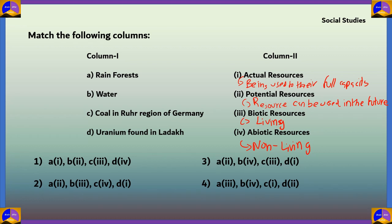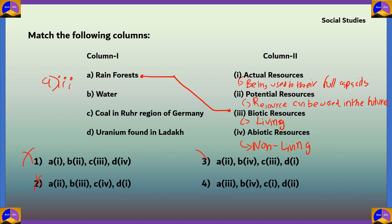We can match each item or use a shortcut: biotic resources are living things, and in column 1 the only living thing is rainforests. So A — rainforests — matches with 3 — biotic resources. Checking the options, only option 4 has A matched with 3, so it is likely the correct answer. We should verify the other matches as well.